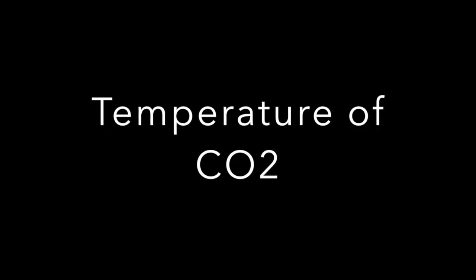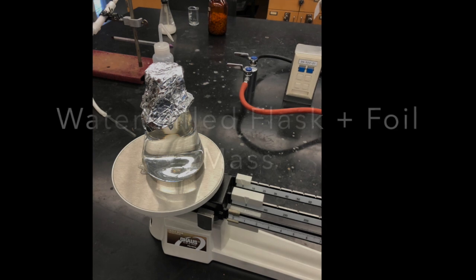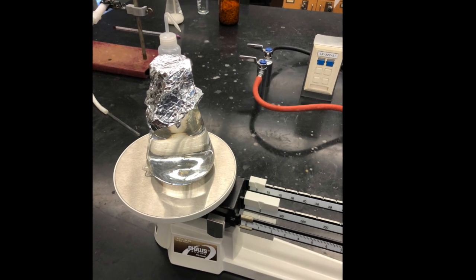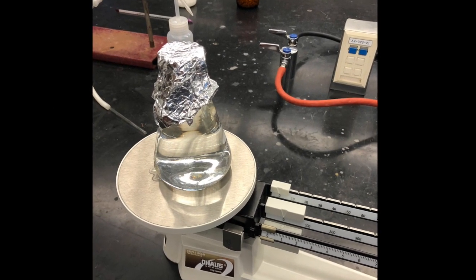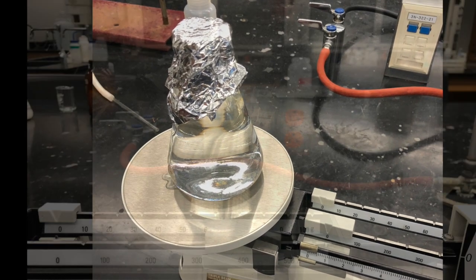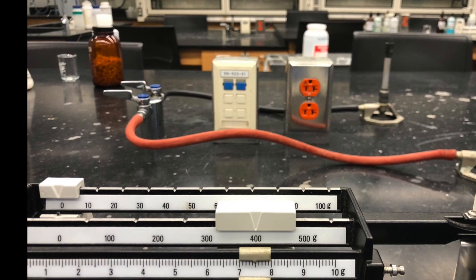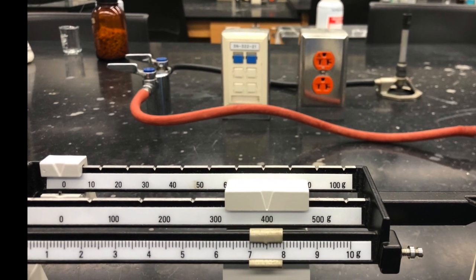Since this is the final flask of carbon dioxide, we will need to take its temperature before the CO2 escapes. Now we will need to find the volume of the flask by filling it with water and taking its mass. This is the mass of the filled flask with water on our triple beam balance, because it's too heavy for the electronic balances.